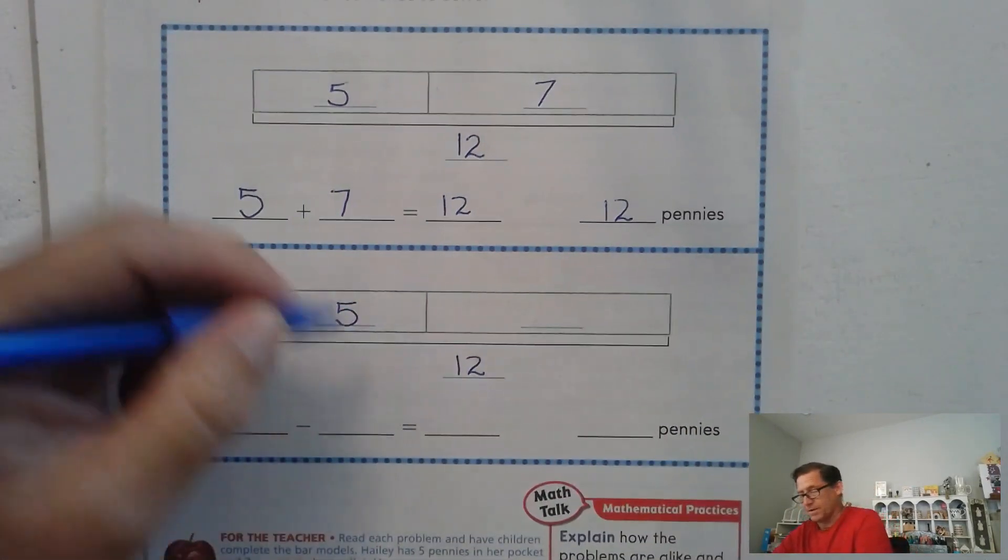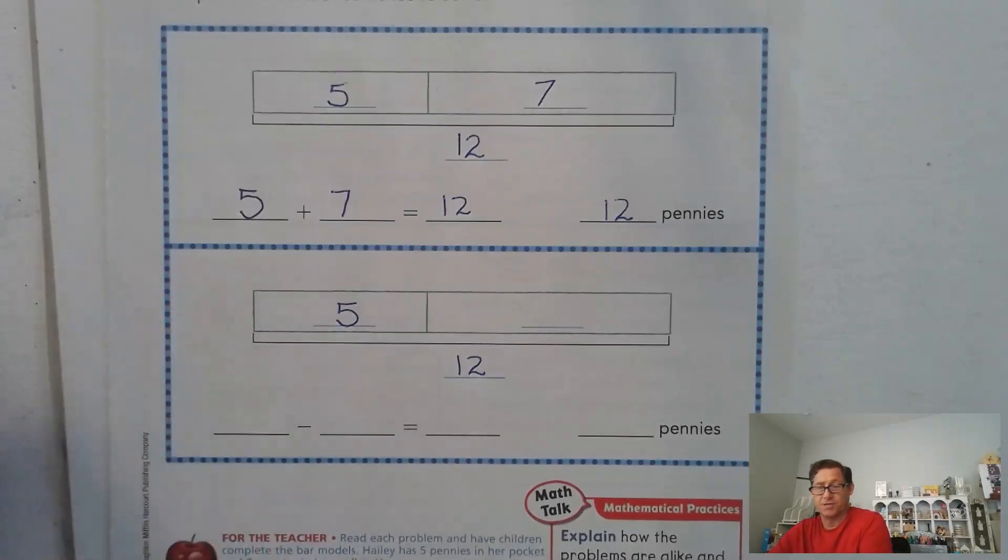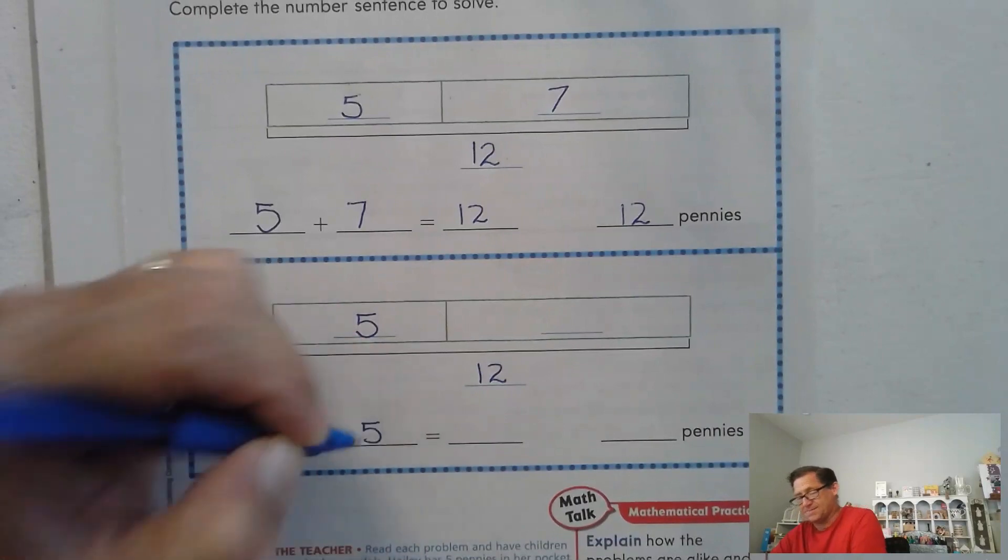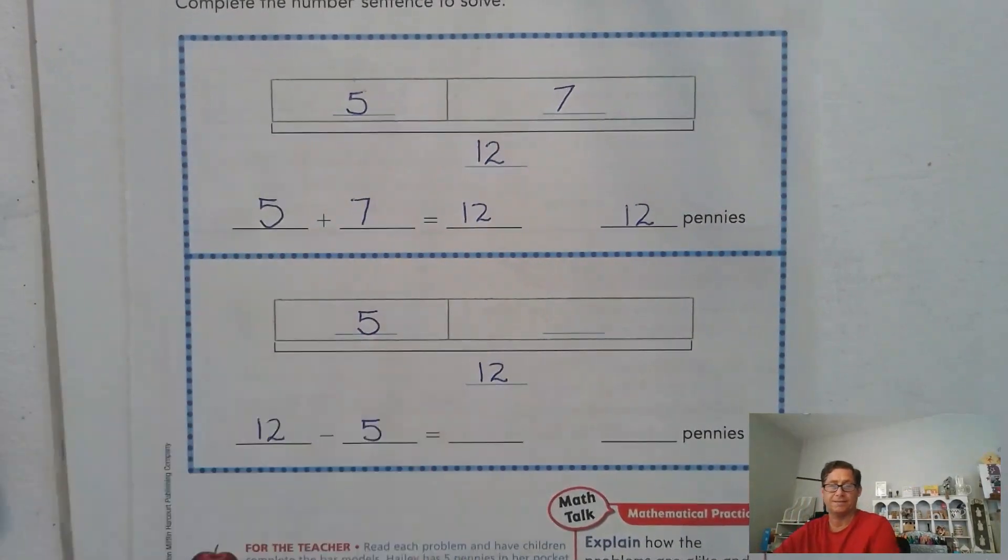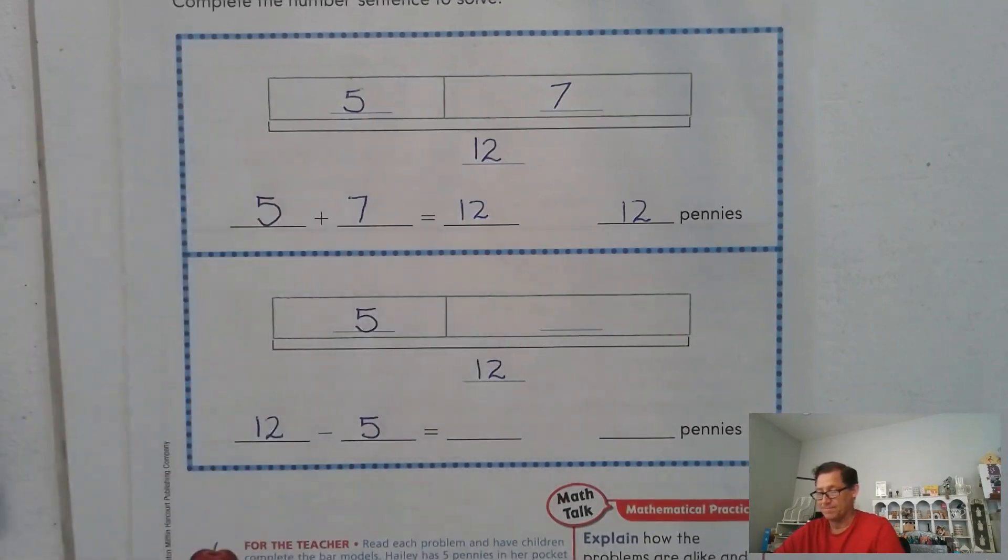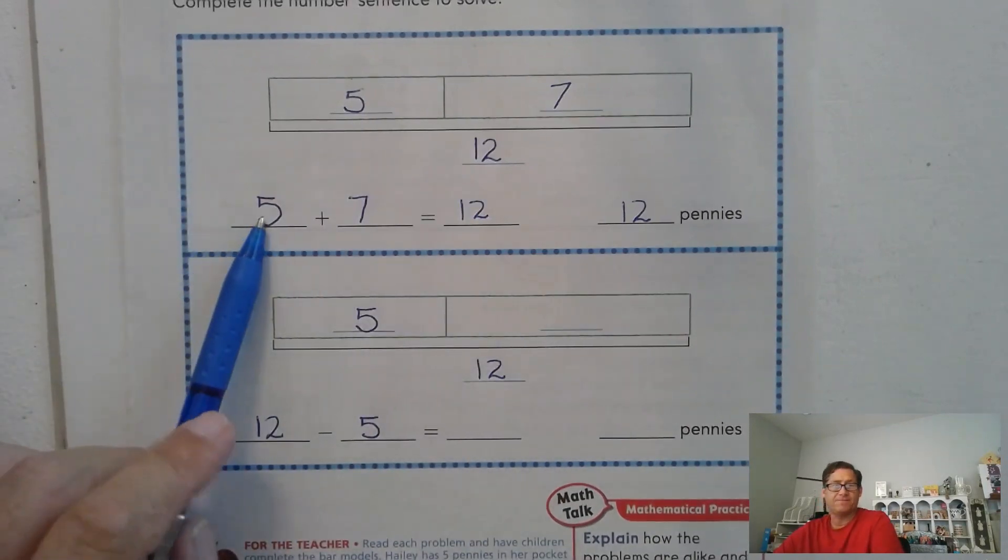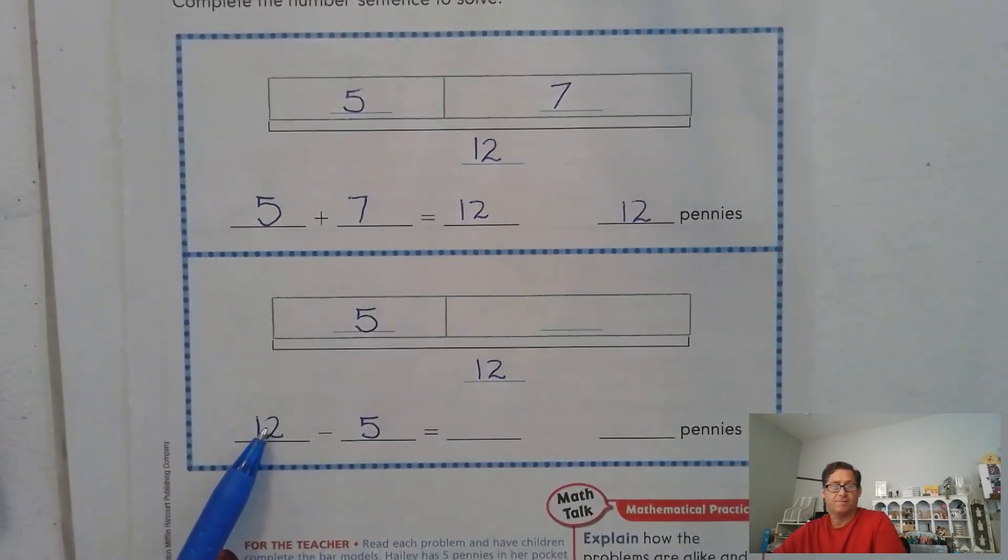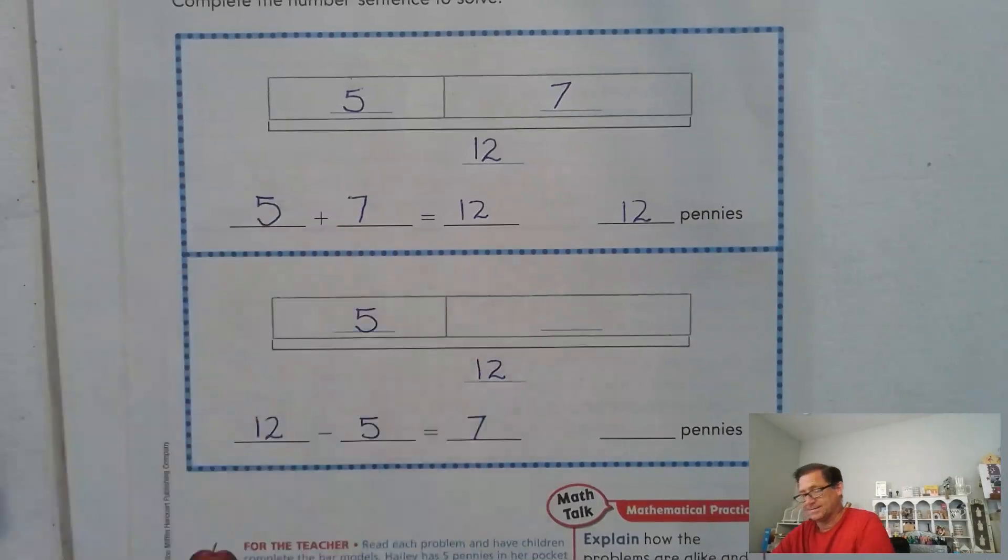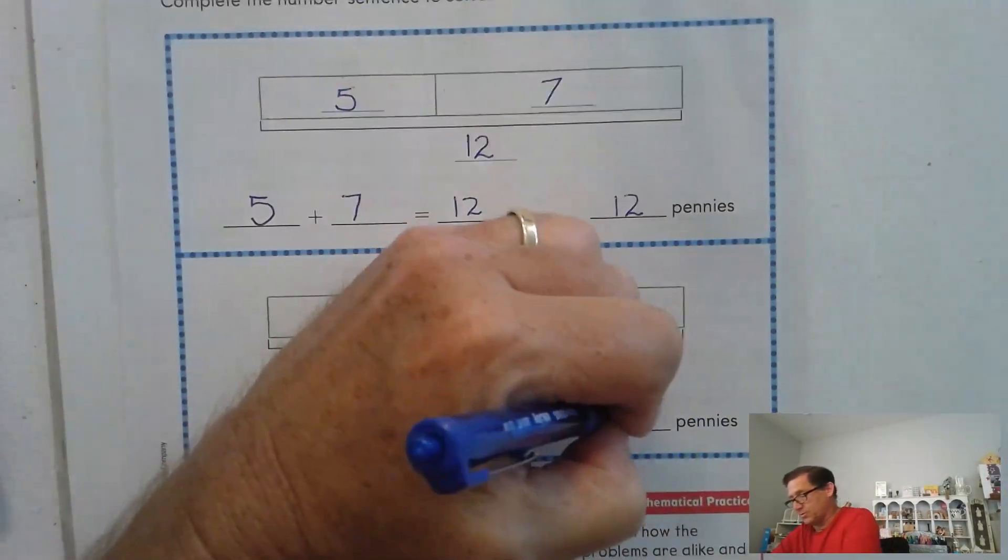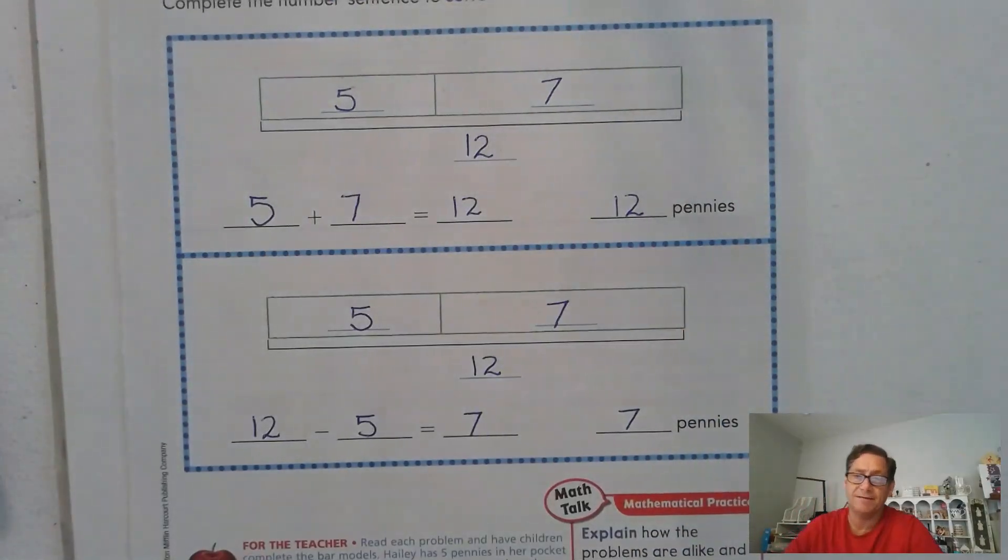Well, remember we can use subtraction to find a missing addend, right? So twelve minus five will tell us the difference or the missing number. Now, if we look up here, we see five, seven, twelve, right? Five plus seven equals twelve. Well, five, so this number has to be seven. So he now has seven pennies.